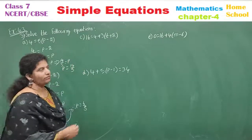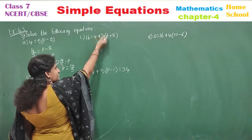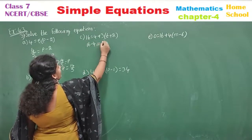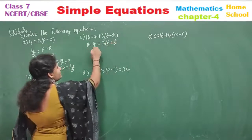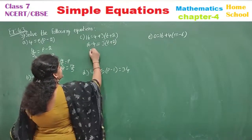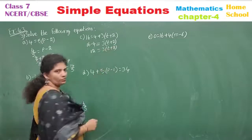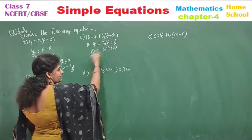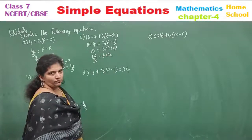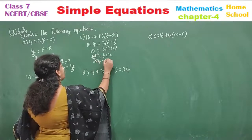Next sub-question (c): 16 is equal to 4 plus 3 into (t plus 2). The variable is t. The extra number 4 is not with the variable — send it to the other side. 16 minus 4 equals 3 into (t plus 2). Simplify: 12 equals 3 into (t plus 2). The multiple 3 goes to the other side as a divisor, giving 12 by 3 equals t plus 2, which is 4 equals t plus 2.